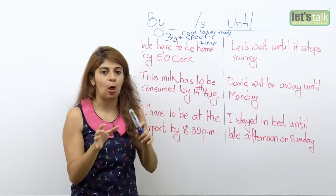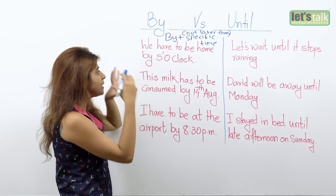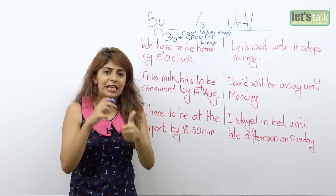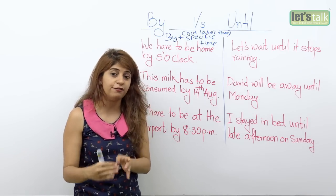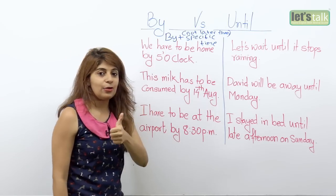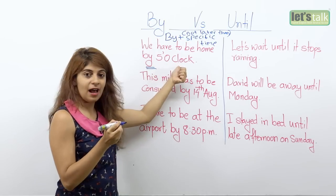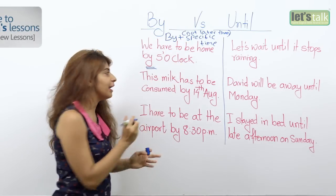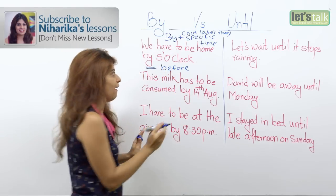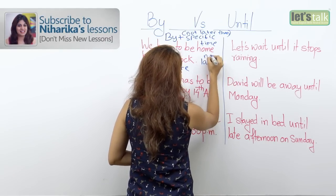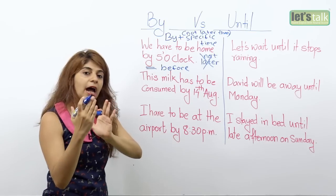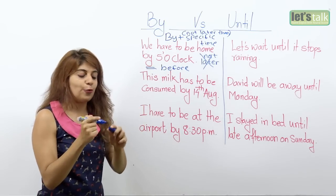For example: 'We have to be home by five o'clock.' You use 'by' followed by a specific time — five o'clock. The reason is that you either have to be home at five or earlier, but not later than five. If you reach later than five, you are late. So when you have to talk about a specific time before which you must get somewhere, you use the word 'by'.